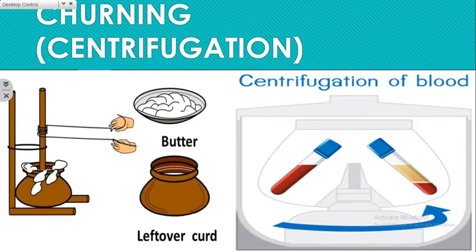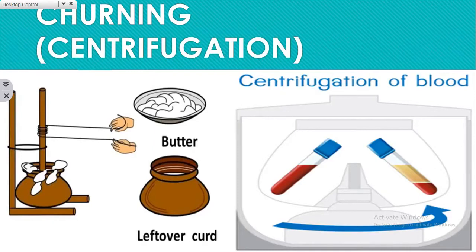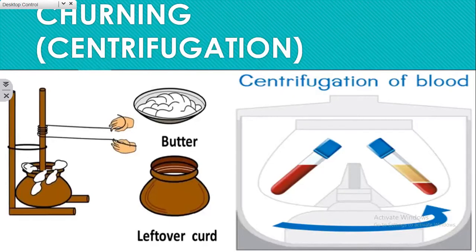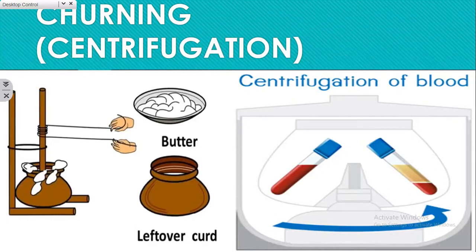For example, blood is centrifuged to separate its components. It contains four components: red blood cells, white blood cells, platelets, and plasma. When blood is taken in a centrifuge tube and placed in the centrifuge machine and allowed to rotate at a constant speed, it forms three different layers. The bottom layer is dense red blood cells, followed by leukocytes and platelets in the middle, and the topmost layer is plasma, as it is light in weight. This is how blood components are separated for testing.